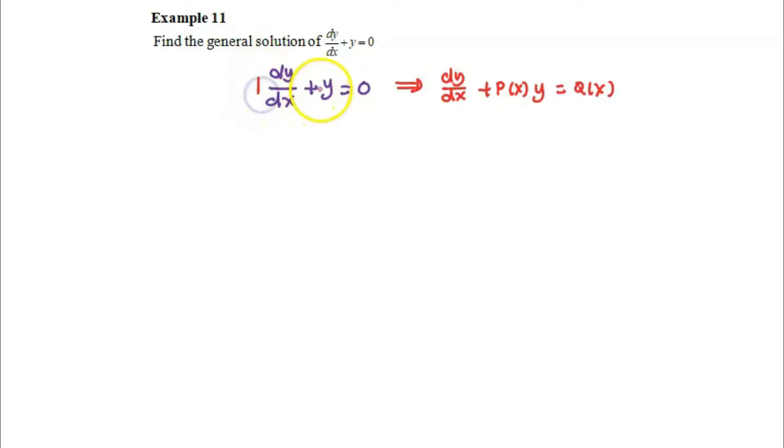The coefficient of dy dx is 1 and y is having coefficient 1 and 0 representing the q of x. So we are able to find out p of x as 1 and q of x as 0.